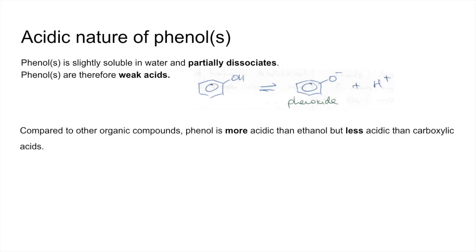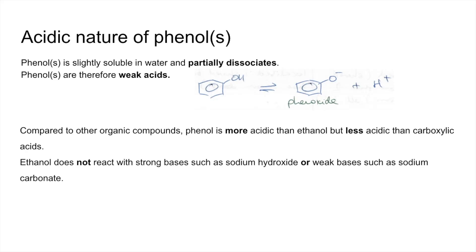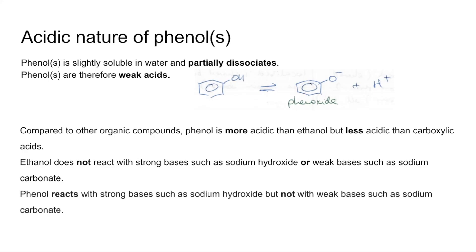So compared to other organic compounds, phenol is more acidic than ethanol, but it's less acidic than carboxylic acids. Because of that, ethanol won't react with strong or weak bases — a strong base such as sodium hydroxide, or a weak base such as sodium carbonate. Phenols will react with strong bases such as sodium hydroxide, as you're going to see on the next slide.